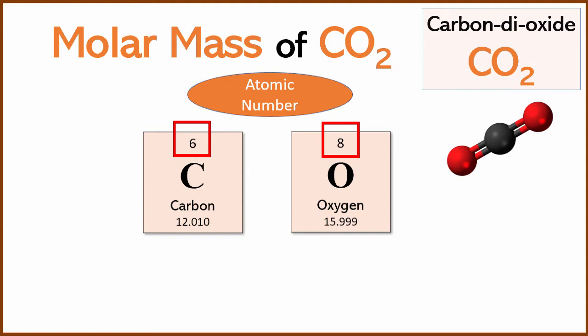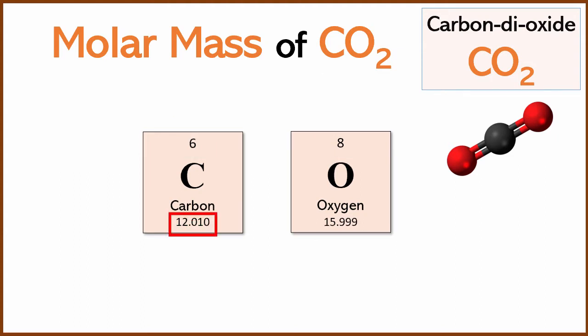Carbon and oxygen. Carbon is 6, oxygen is 8. The atomic masses are 12.010 and 15.999. This is atomic mass, which is the mass of a single carbon atom and a single oxygen atom. Now for molar mass of a compound...